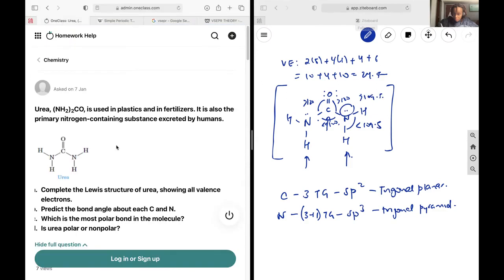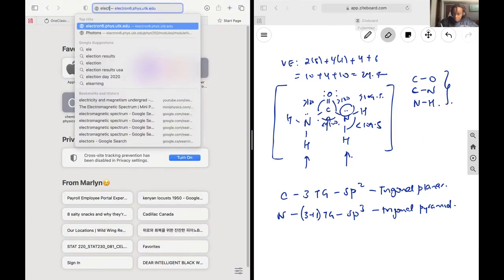And then lastly, they're asking for the most polar bond in the molecule. And so I have a CO bond, a CN bond, an NH bond. Those are the three types of bonds I have. I can determine which one is the most polar by determining the difference in electronegativity.